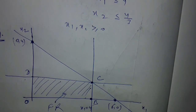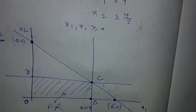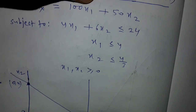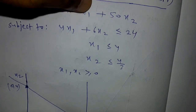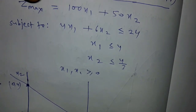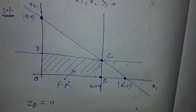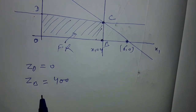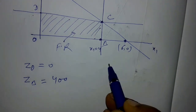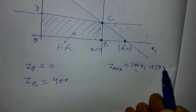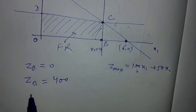At point B, x1 = 4, so Z at B = 100 × 4 + 50 × 0 = 400, since Z max = 100x1 + 50x2.